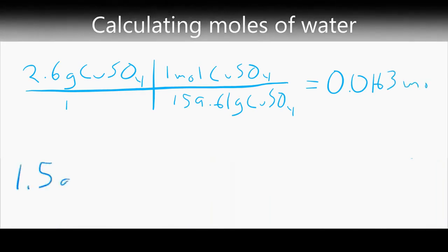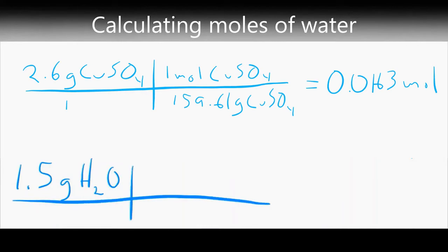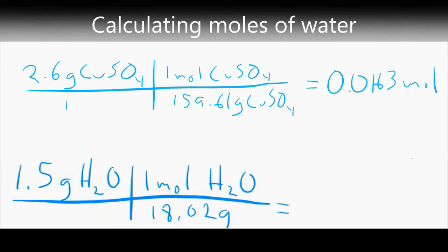The number of moles of water can be calculated by starting with the mass of water removed from the sample by the heating process, 1.5 grams, and dividing by 18.02 grams, the molar mass of water. There were 0.0832 moles of water removed from the hydrate.